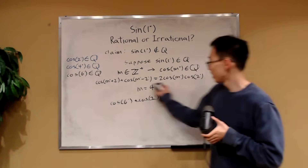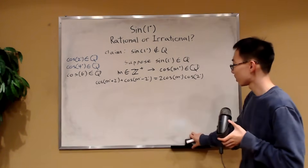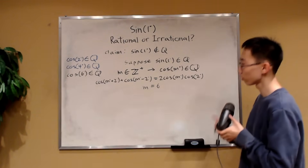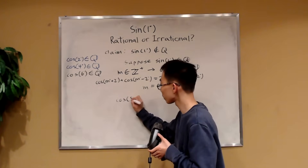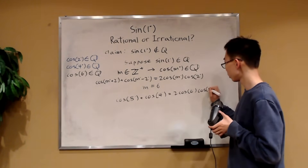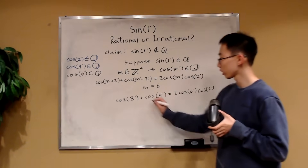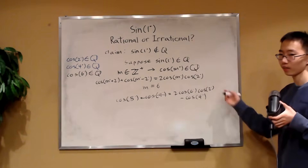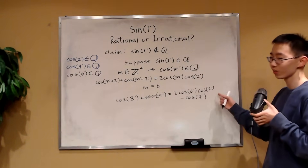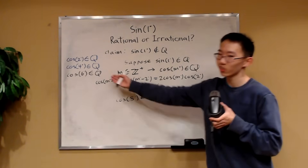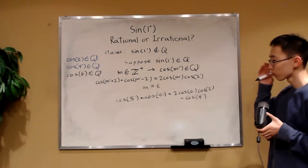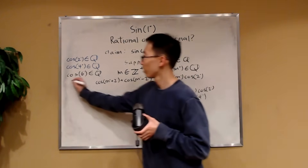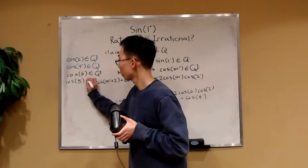Can we go further? Yes — if instead we take m equal to 6, then by this identity we can derive cosine of 8 degrees plus cosine of 2 degrees equals 2 cosine of 6 degrees times cosine of 2 degrees. Taking cosine of 4 degrees to the other side, because cosine of 6 degrees, cosine of 2 degrees, and cosine of 4 degrees are all rational, cosine of 8 degrees is also rational.